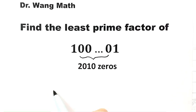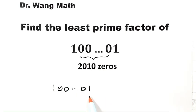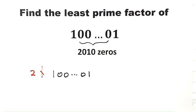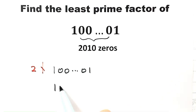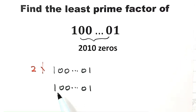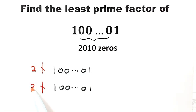First, let's see if this number is divisible by 2. Because the last digit is 1, it's not divisible by 2. Now let's see if it's divisible by 3. For any number, if it's divisible by 3 then the sum of all its digits must be divisible by 3. But here the sum of digits is 1 plus 1 equals 2, and 2 is not divisible by 3, so this number is not divisible by 3.